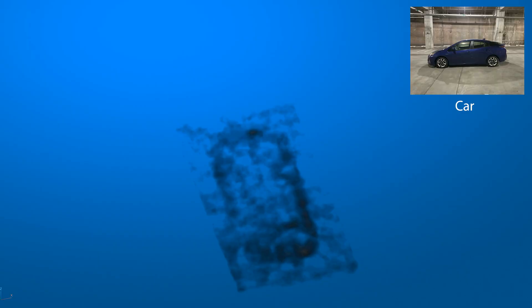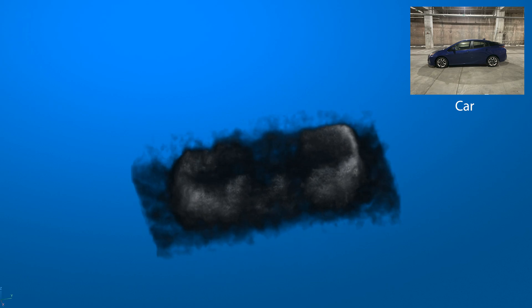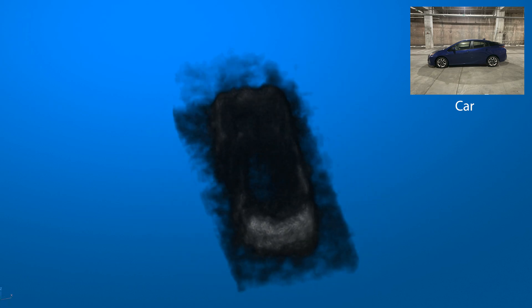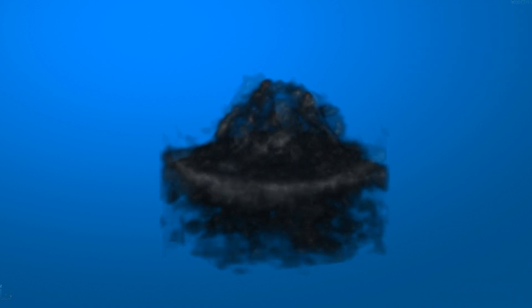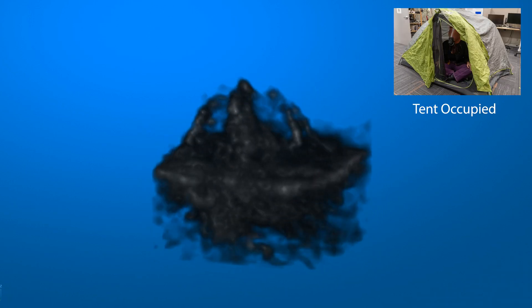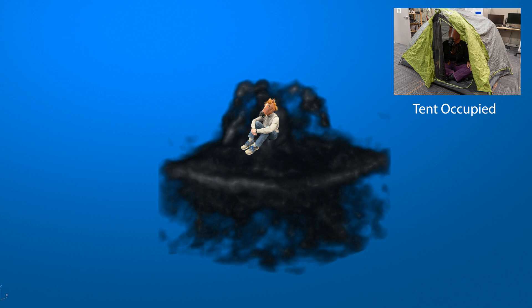As a byproduct, DART can also produce an implicit tomography that can be sampled to form a high-quality 3D image of the scene. This allows DART to be used for radar imaging, for example to see through surfaces that are opaque to cameras or LiDAR.